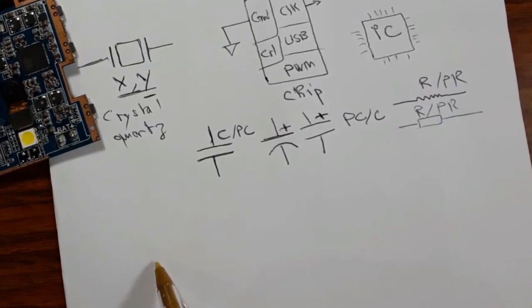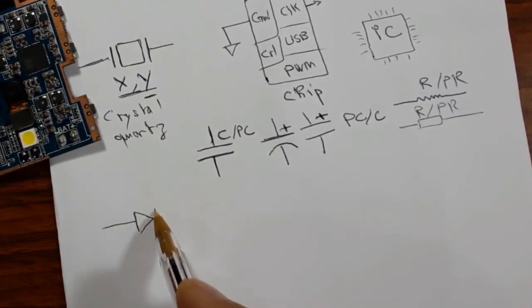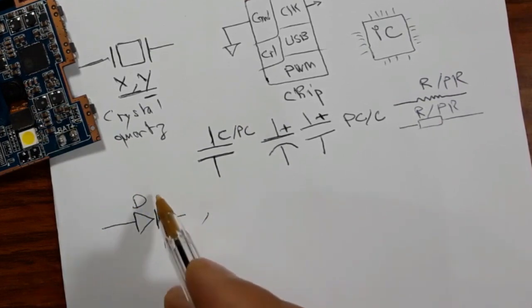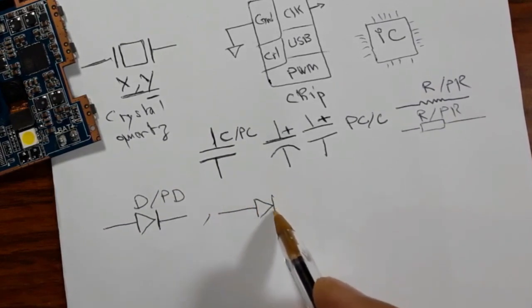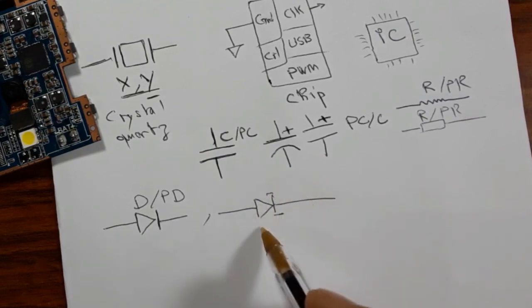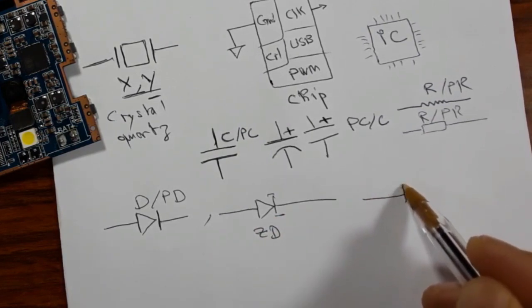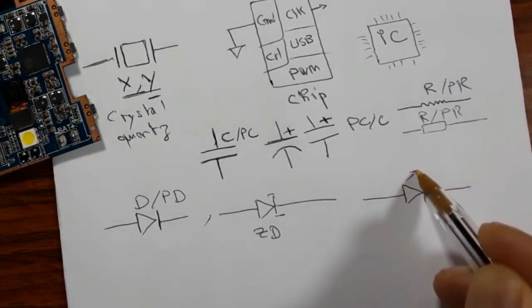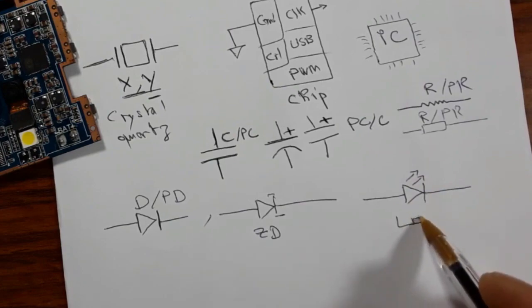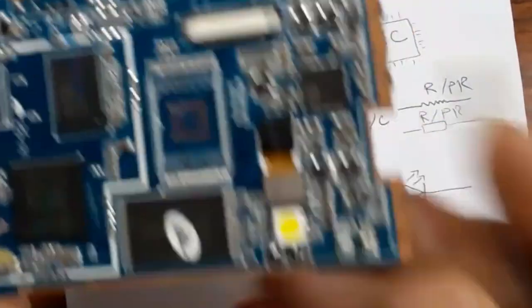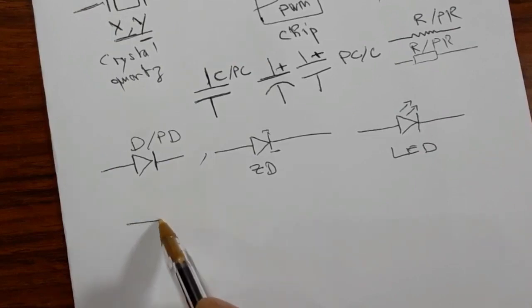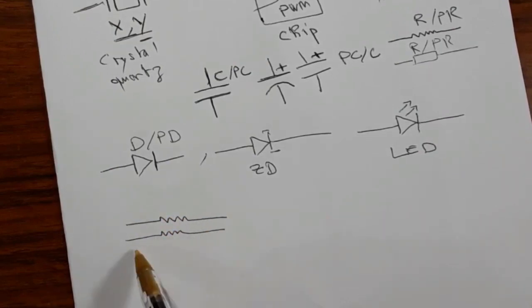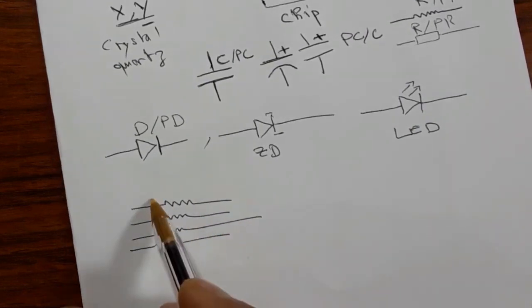For the diode, this is the symbol. The reference is D, or you can also find PD. There is also another symbol for the Zener diode. For an LED diode, the symbol has two arrows here — exactly like this. This is an LED diode, and the only component we can find near this LED diode is the necessary resistor.